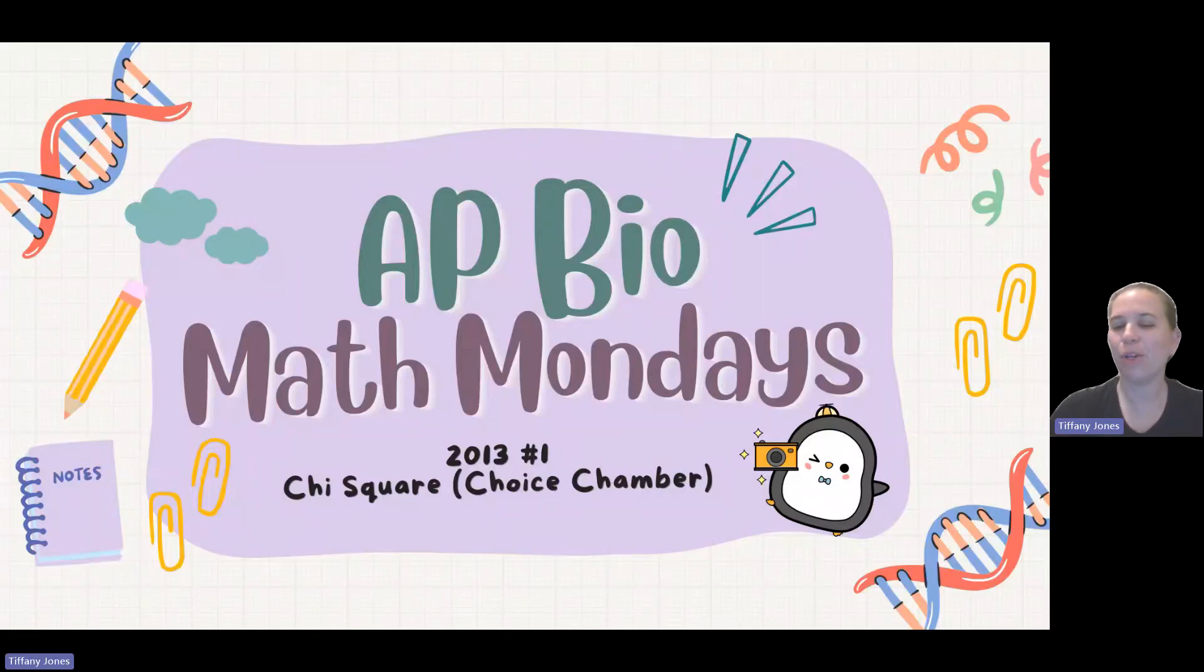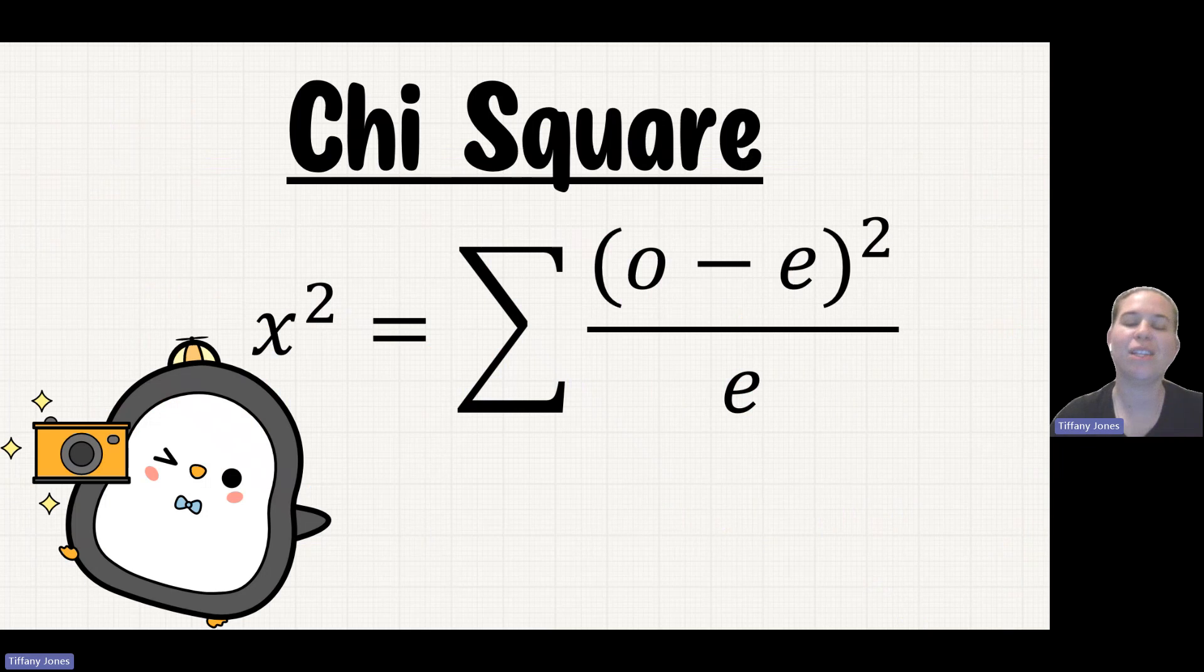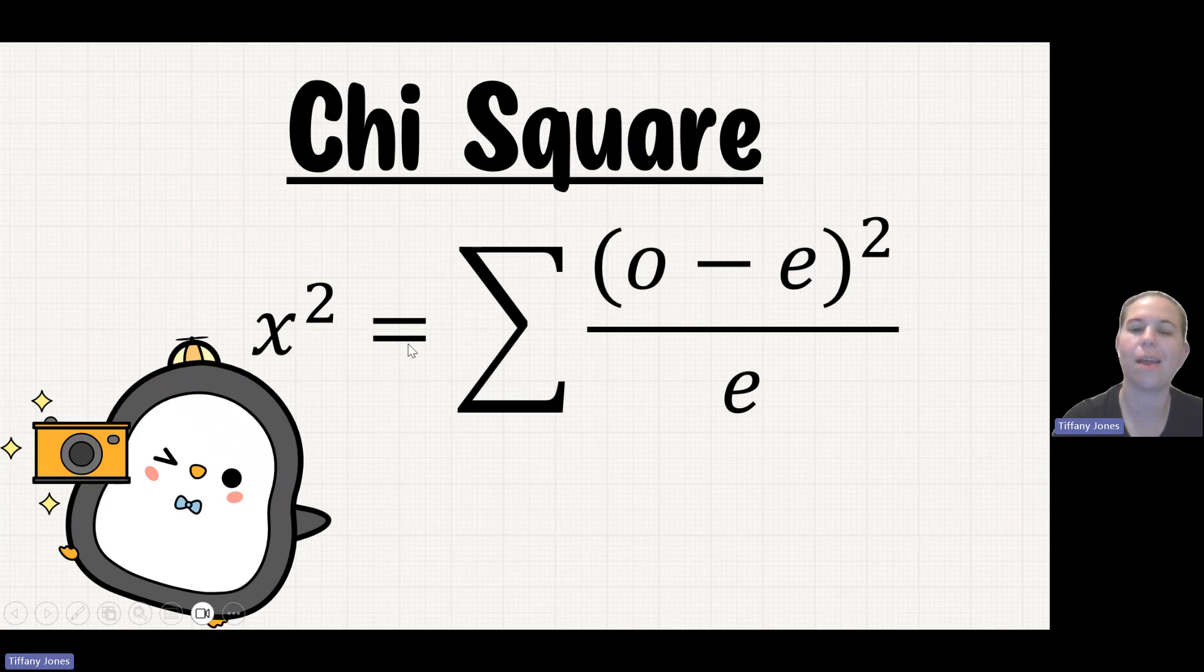What's up everyone? Today we're going to do the chi-square question from 2013 number one. So a reminder that this is the chi-square formula we're going to see on the formula sheet. We've got our chi-square being this little x-symbol squared equals our summation of our observed minus our expected squared over our expected.